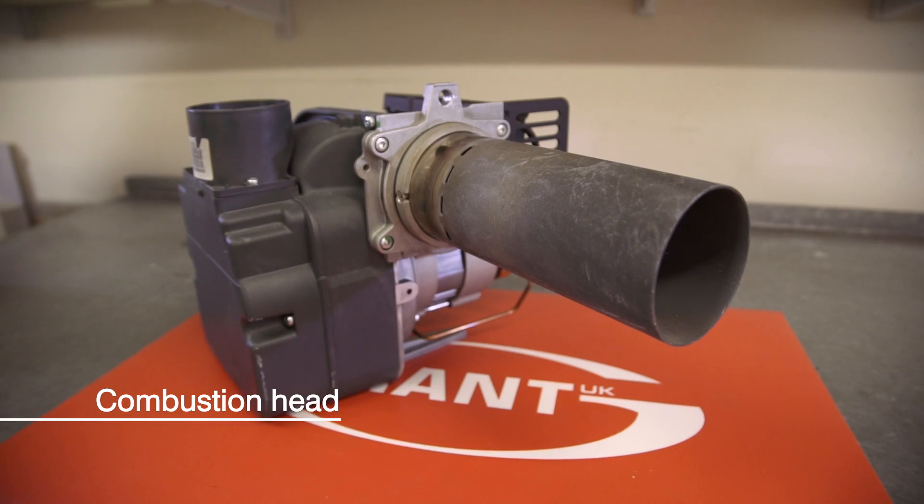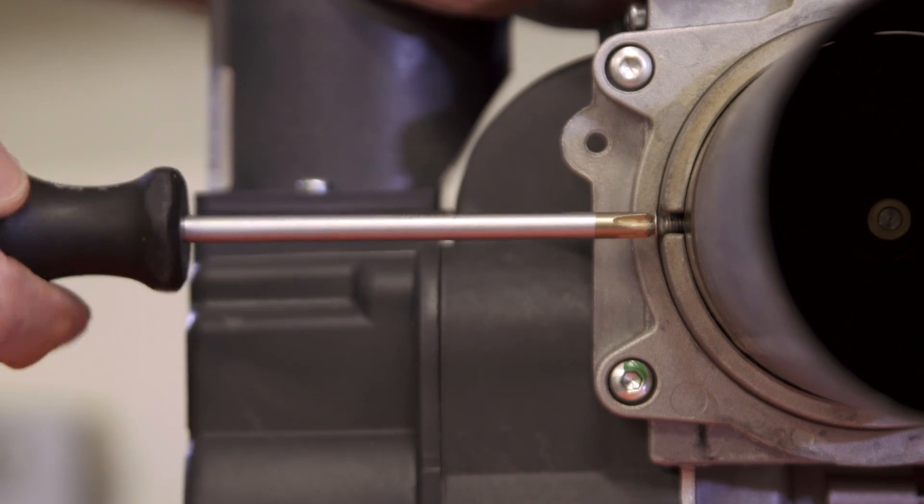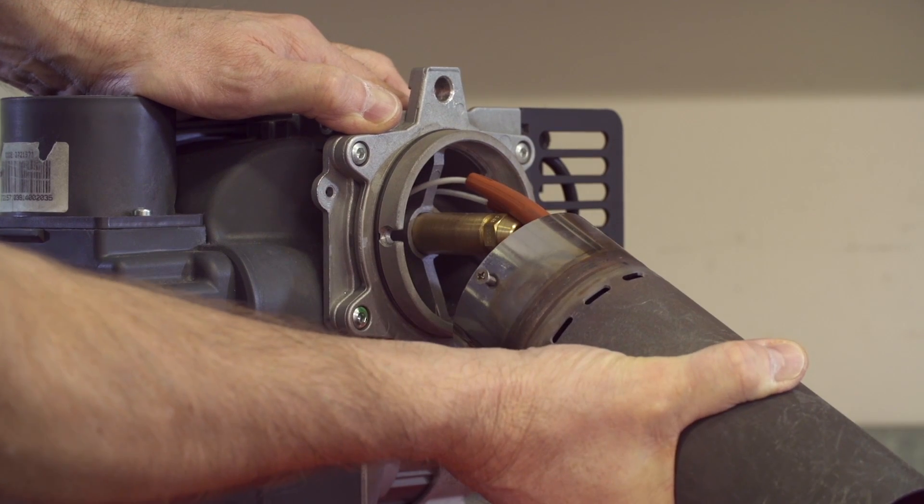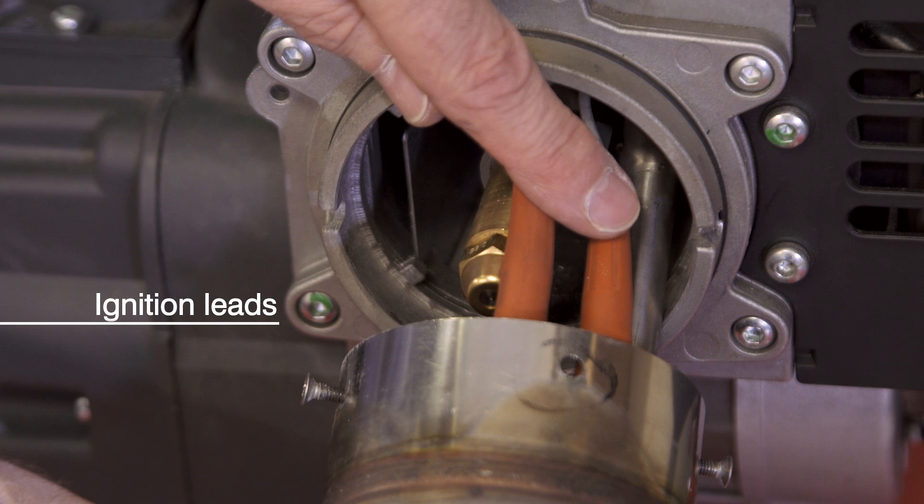You fit the combustion head the same way as usual, with two screws. Just loosen these, and you can pull out the head from the burner body. Don't forget to disconnect the two ignition leads from the electrodes inside the head.